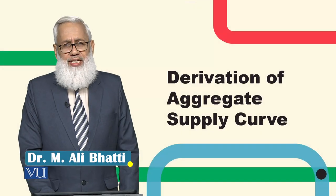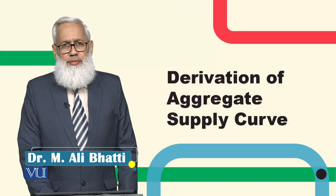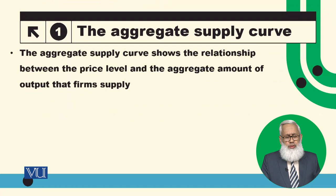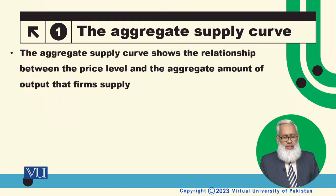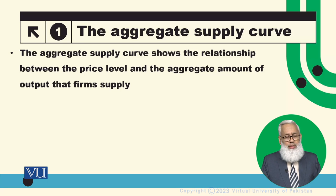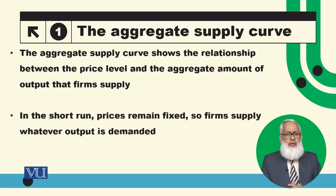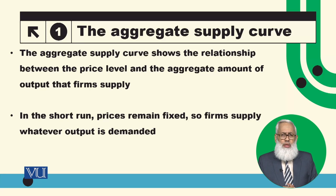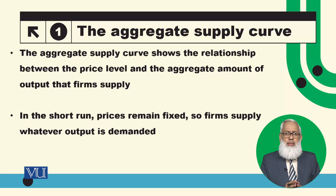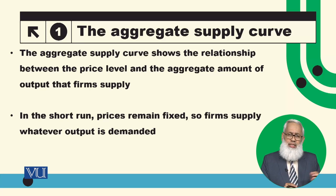Derivation of the Aggregate Supply Curve. The Aggregate Supply Curve shows the relationship between the price level and the aggregate amount of output that firms supply. Various assumptions are that firms behave differently in the short-run and long-run. In the short-run, they are willing to supply any amount of output that is demanded at a given price.